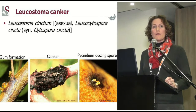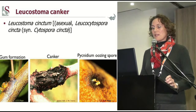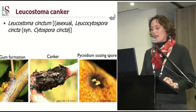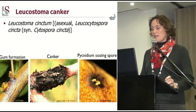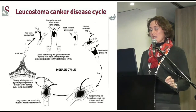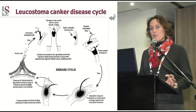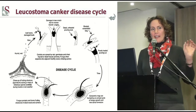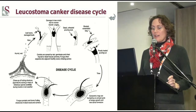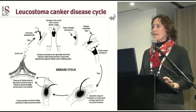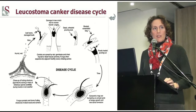I would like to illustrate a few of these canker diseases and wood rots. Leucostoma canker is very prominent on stone fruit, caused by Leucostoma species. Symptoms include gum formation where infection has taken place, a canker that forms due to that infection, and then a sporulation structure called a pycnidium that oozes spores. Looking at the disease cycle, the fruiting structure — like a little volcano — shoots out spores. When there is enough humidity and rain, it produces spores that are dispersed by rain splashing, pruning shears, and insects.